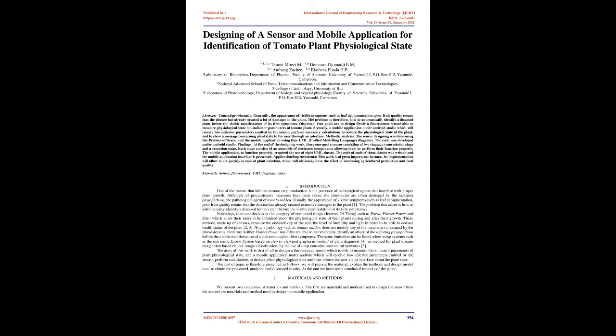Objective: our goals are to design firstly a fluorescence sensor able to measure physiological state bio-indicator parameters of tomato plant. Secondly, a mobile application under Android Studio which will receive bio-indicator parameters emitted by the sensor, perform necessary calculations to deduce the physiological state of the plant, and to show a message concerning plant state to the user through an interface.